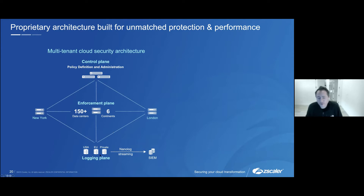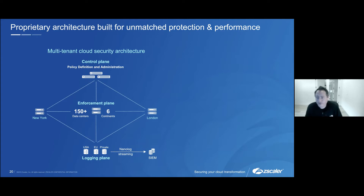Last but not least, the bottom piece is the logging plane. You want to aggregate your logs back to particular regions or theaters. Customers don't want the liability of their data being potentially sharded or stored in 150 sites around the world — they want it more aggregated. When we come inline in the enforcement plane, we never touch the drive with any customer data. We don't cache. We never write logs to local disks; they stream in real time back to the logging plane. We can guarantee if you're a customer in the US, we'll store your logs in the US; if you're in the EU, we'll store it in the EU. We can even store it in private logging clusters on-prem for data sovereignty or government use cases.